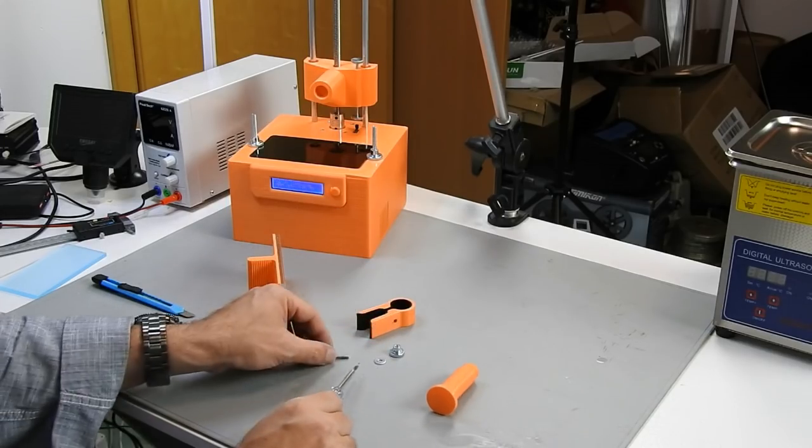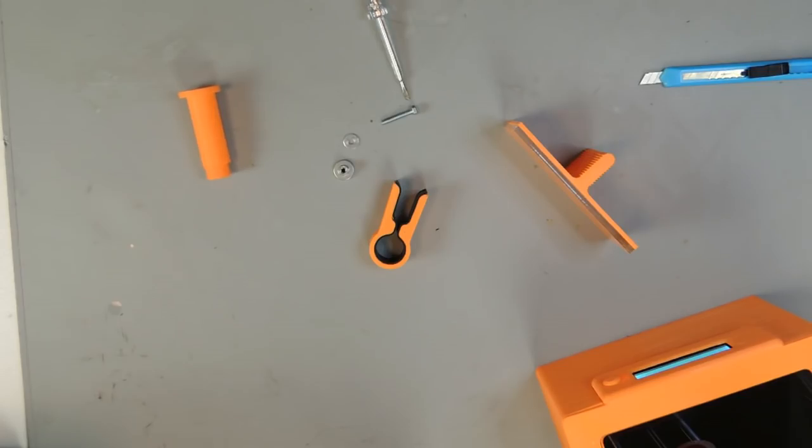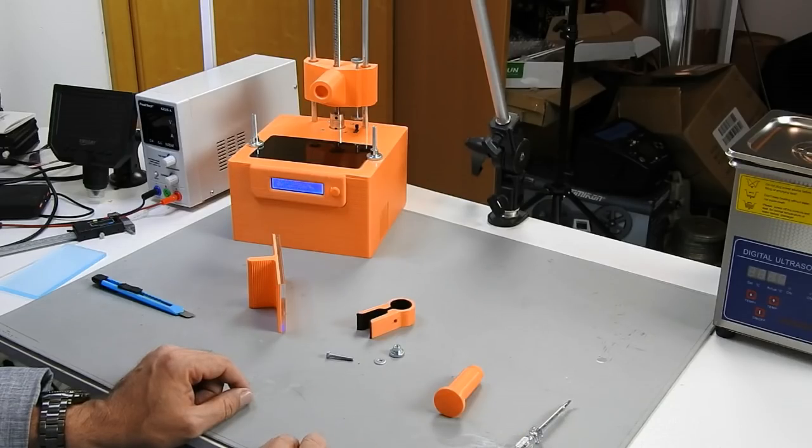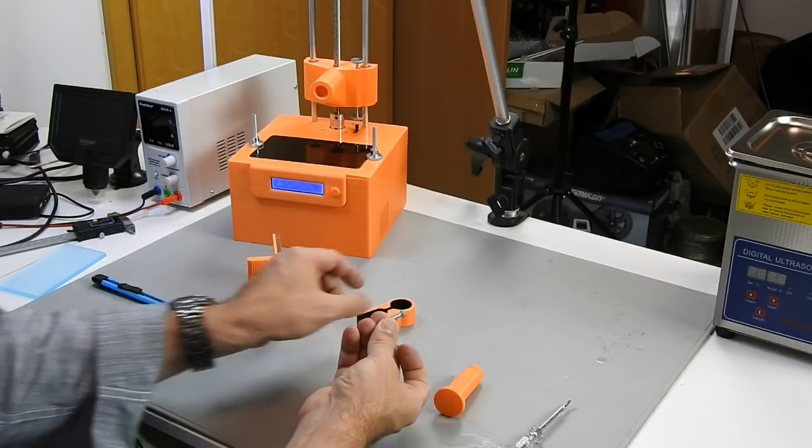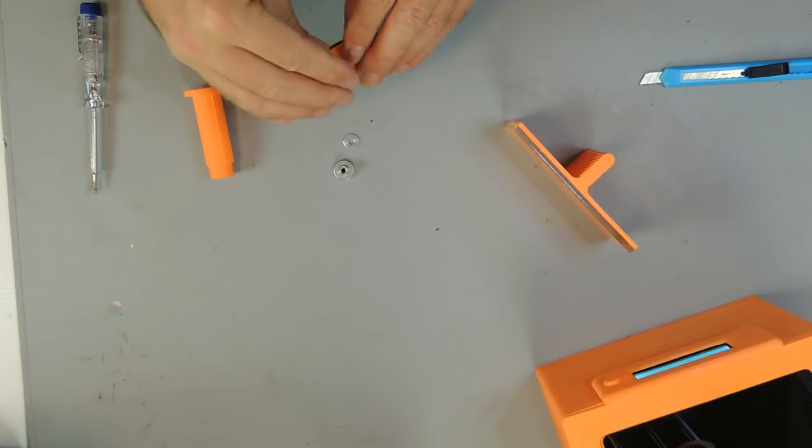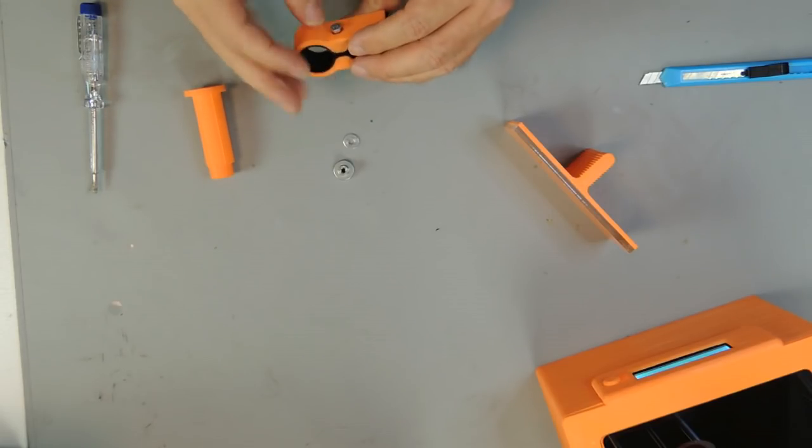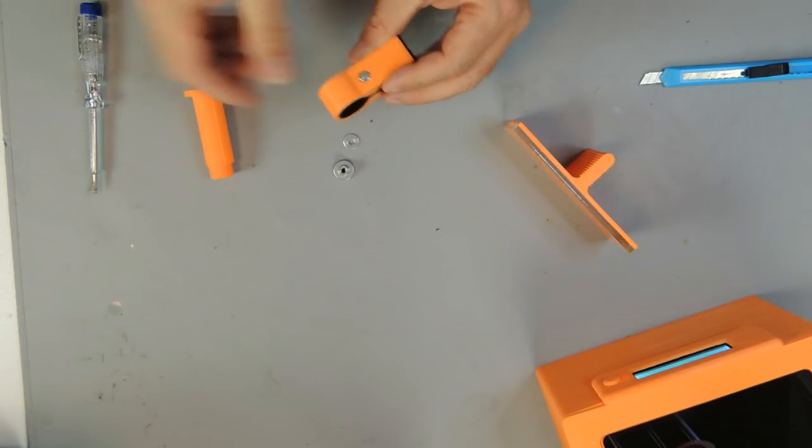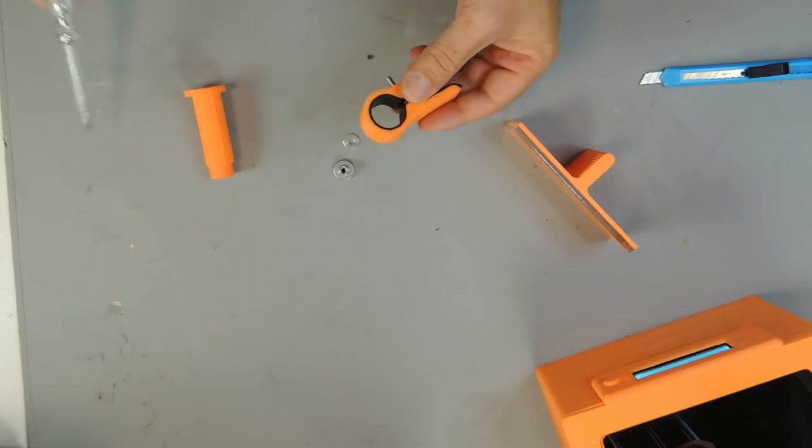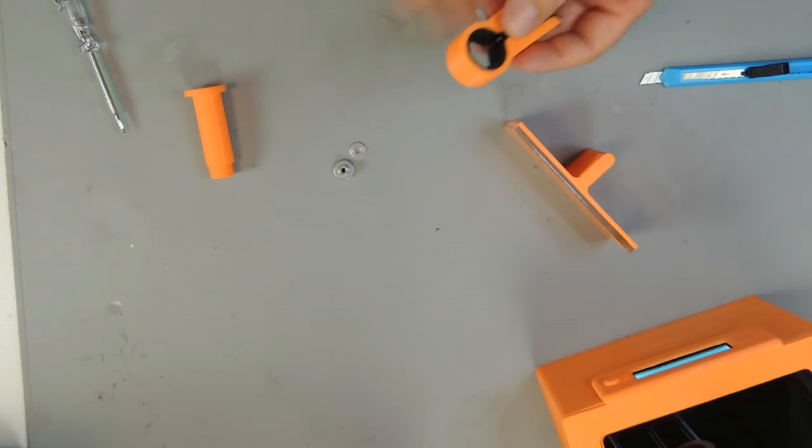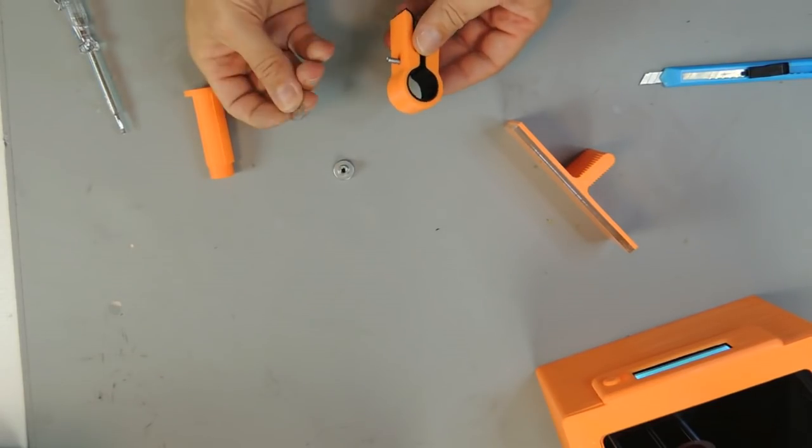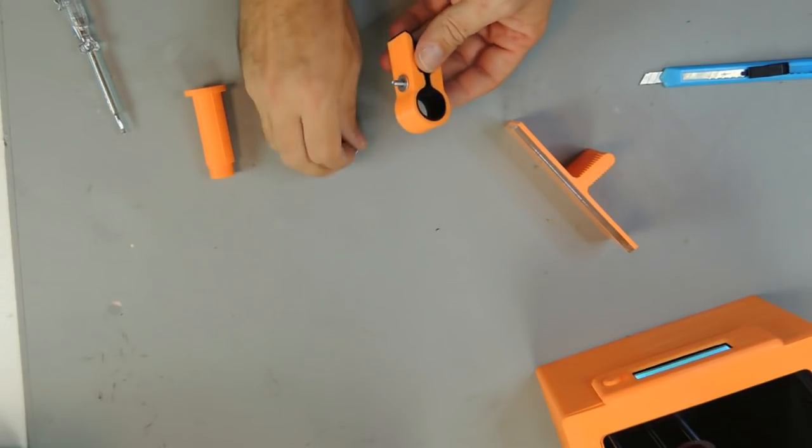Also we need an M4 screw, 25mm length, with a hex shaped head and washer and M4 thumbs nut. Those hardware pieces will go onto the 3D printed part which has this clamp-like shape. On the one side there is a hole that is hex shaped. This is where the screw goes in. On the other side we will add the washer first and then the M4 thumbs nut.